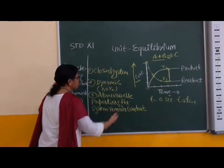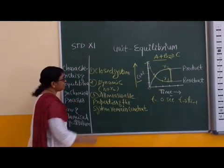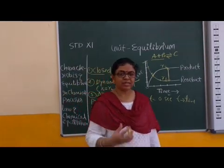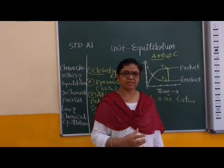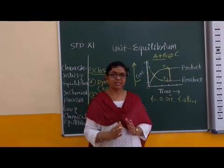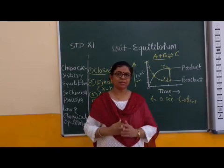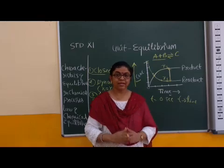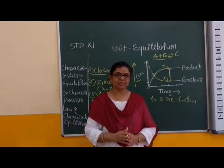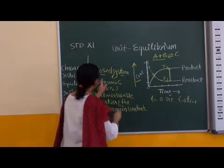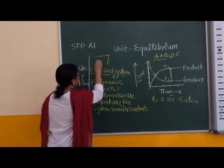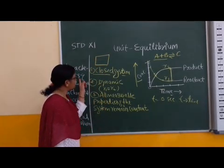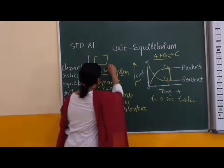There are common features of equilibrium. First is the closed system. When one product or reactant is in gaseous phase, a closed system is required. If reactant is in gaseous phase, a closed system is required for the complete forward reaction. If product is in gaseous phase, for the backward reaction — where product acts as reactant — a closed system is also required. You know the types of system: open, closed, and isolated. For this equilibrium state, a closed system is required.